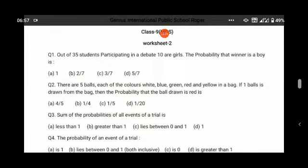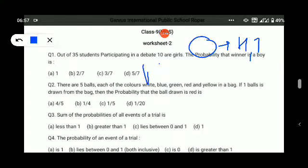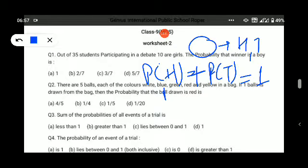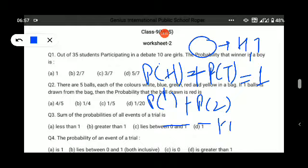Next is sum of the probabilities of all events of a trial. If we toss a coin, there are two possibilities: head and tail. If you find probability of head plus probability of tail, you will get one. Similarly with a die, if you find probability of getting 1, 2, 3, 4, 5, and 6, and add all these events together, the answer will be one. Sum of all elementary cases is always one.